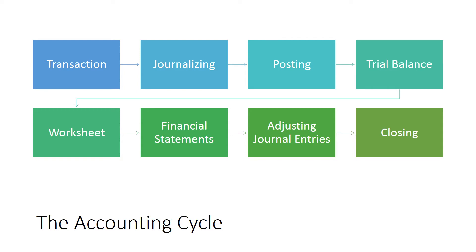Your final task in the accounting cycle is to close the books. To close the books is to ready each revenue and expense account for the next accounting period, to adjust the owner's equity account by the amount of the profit or loss incurred in the previous period, and to reflect money drawn by the owner for personal use. This is important because, if the books are not closed properly, an inaccurate picture of the business's operations will result.